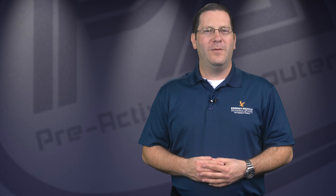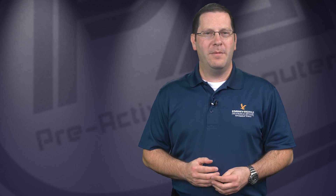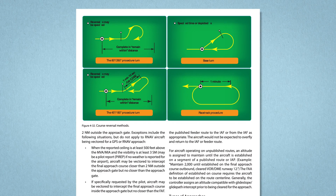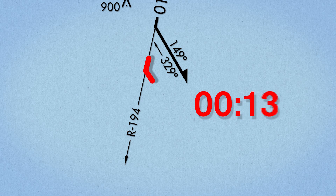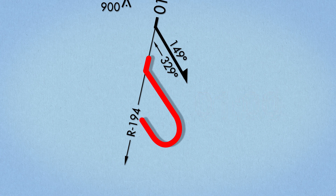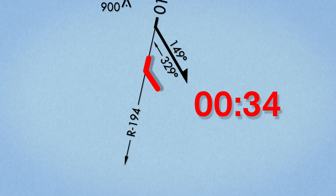Approach plates depict this 45-180 procedure turn type, but you can fly any type of procedure turn as listed in the Instrument Procedures Handbook. Upon reaching your chosen time or distance outbound from the VOR, fly the outbound heading in the direction of the barbed arrow for one minute. Then reverse course to the reciprocal heading and intercept the final approach course inbound. Remember the time could change based on wind conditions.